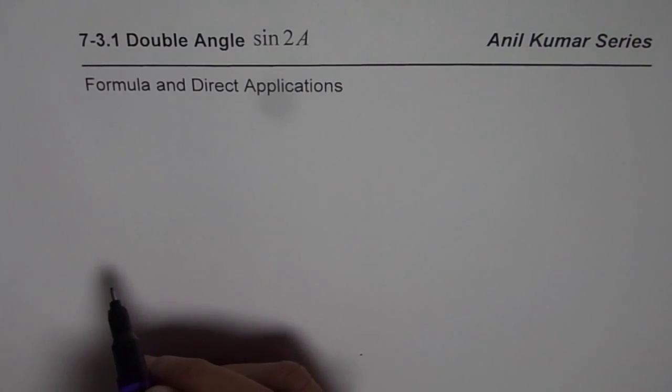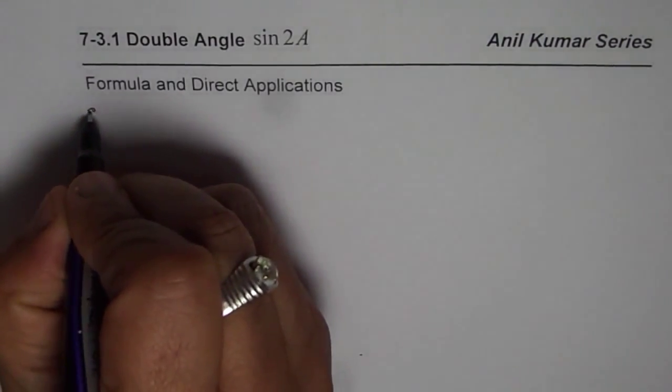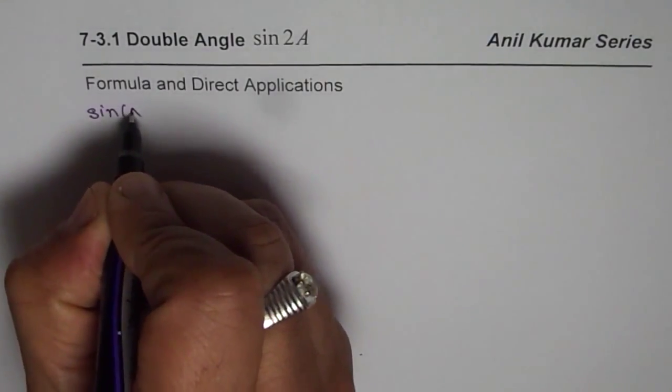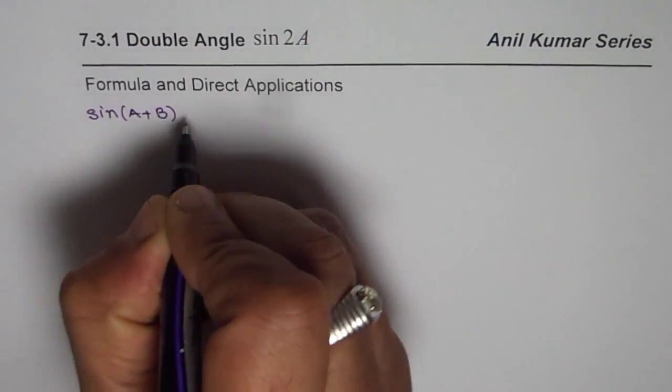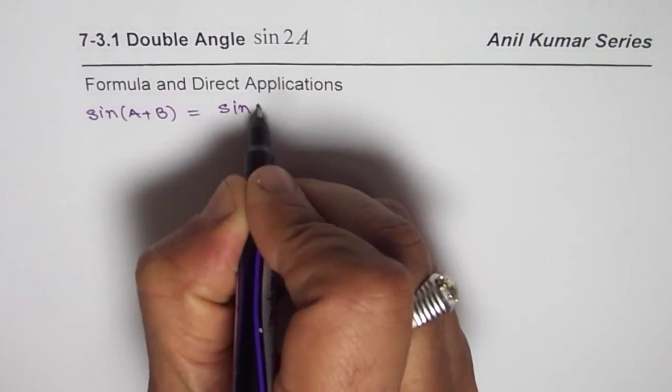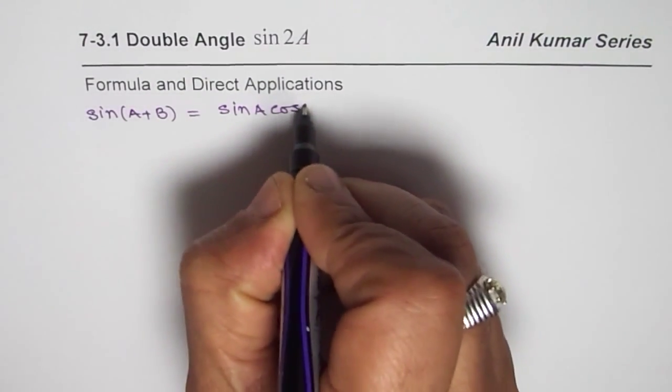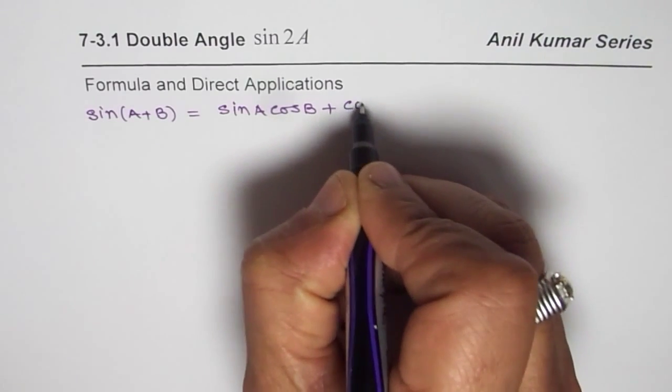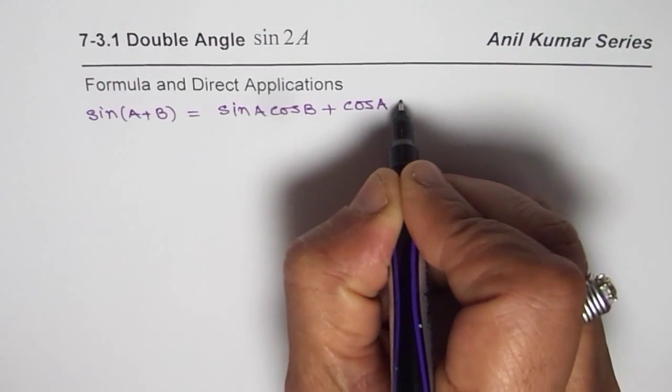Let us begin by the compound angle formula which is sine of A plus B. Now what is sine of A plus B? As you know, sine of A plus B is sine A cos B plus cos A sine B.